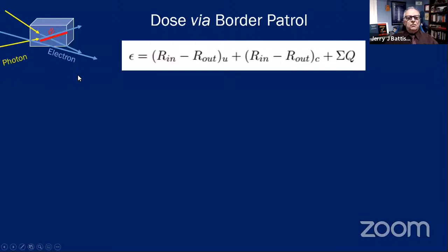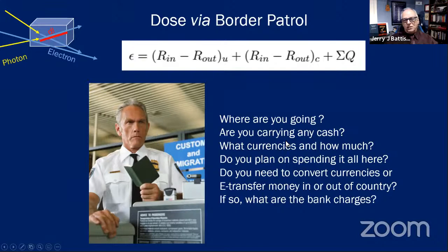Let's look at dose. You can calculate dose by acting like a customs officer — look at all particles coming into the voxel, including electrons and photons, and all particles coming out, take the difference, and you have the dose. There's also a term Q in case there are changes between mass and energy. If you do this for all incoming and outgoing particles in a volume you can calculate the energy deposited.